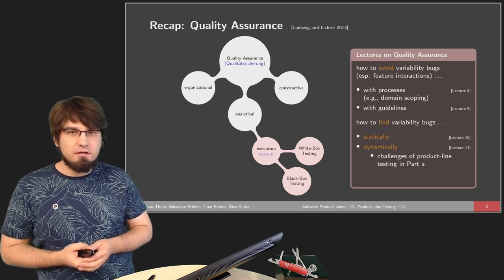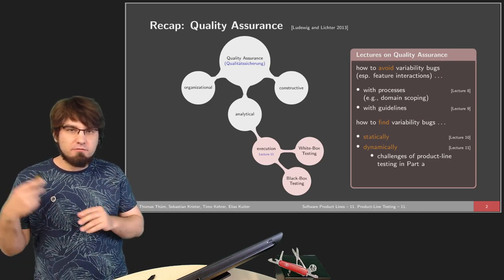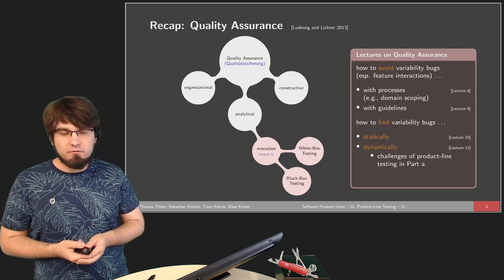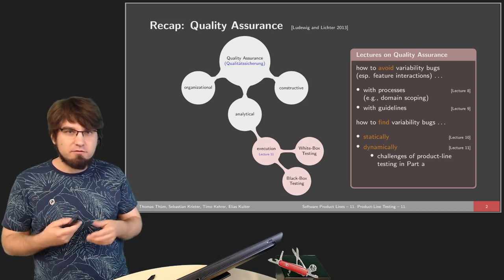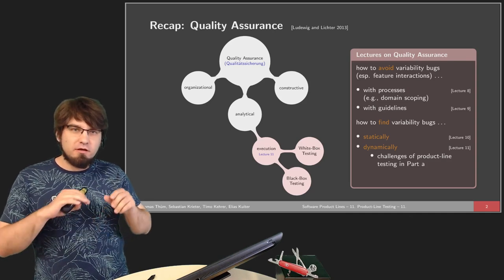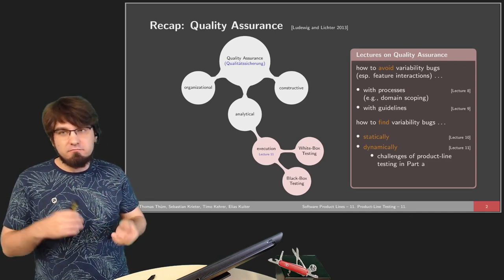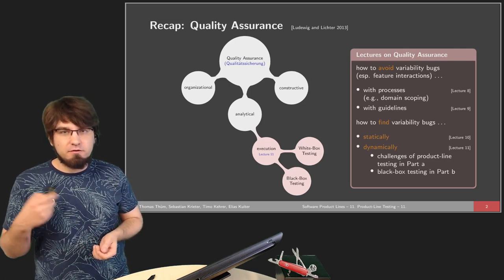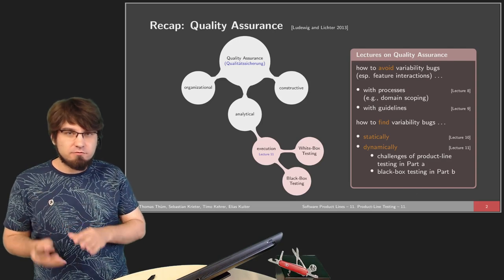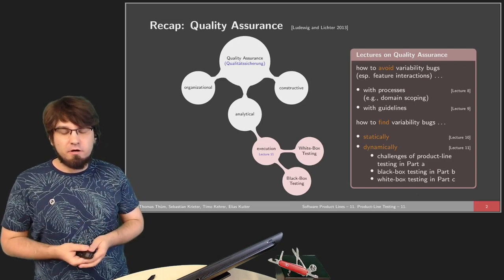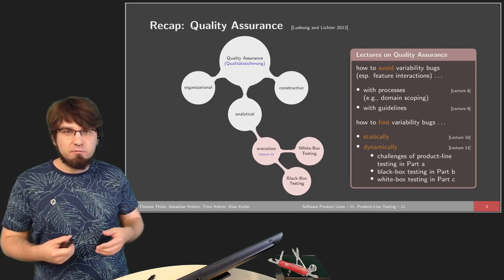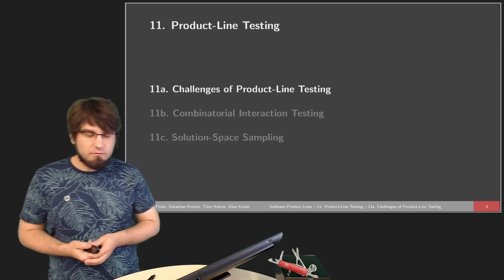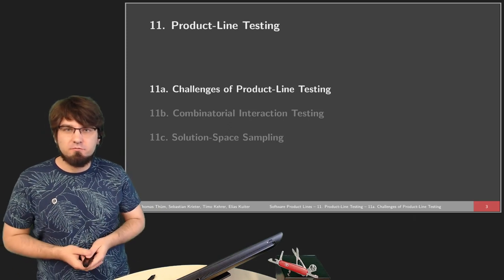In this lecture, we focus on executing our product line. We look at static analysis and both white box and black box testing. First, we'll look at challenges when testing a product line compared to testing a single system. Then we'll look at black box testing for software product lines, and in the third part, white box testing where we take source code into account.